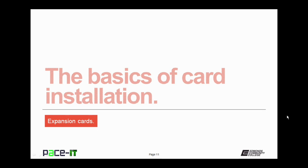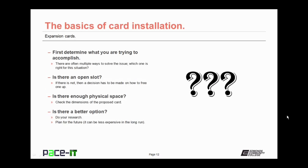Now let's cover the basic steps of Expansion Card installation. Before the physical steps, there is some planning involved. First, determine what you're trying to accomplish, as there are often multiple ways to solve an issue. Next, is there an open slot? If not, you need to decide how to free up a slot or go a different route. Also check that there's enough physical space inside the case. Finally, consider whether there's a better option — do your research and plan for the future, as it can be less expensive to plan for the long run.